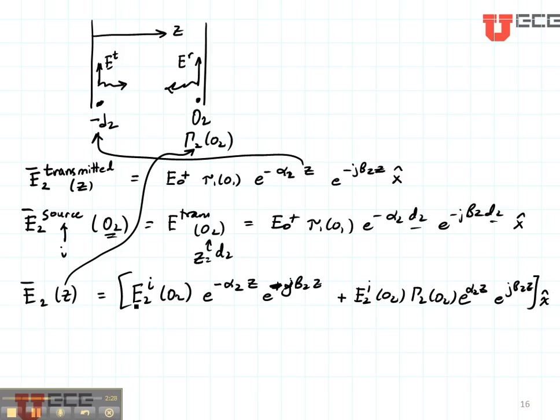Now notice how this is exactly like our region number 1 except that we are using this field as our incident field instead of the one that would have been given at the beginning of the problem. Also notice that we're using a gamma 2 at O2 instead of our gamma 1 at O1. So that's how we get the fields in region 2.